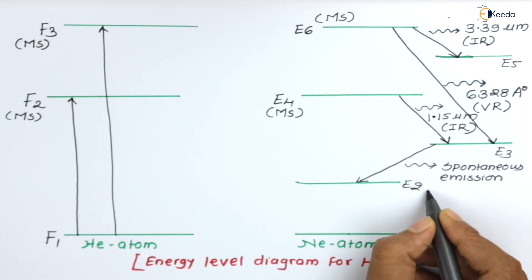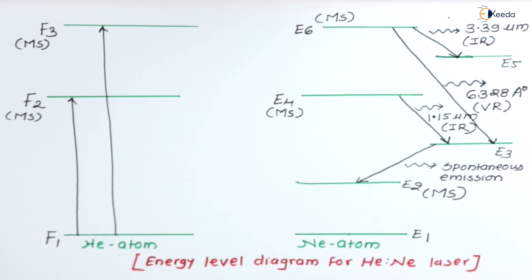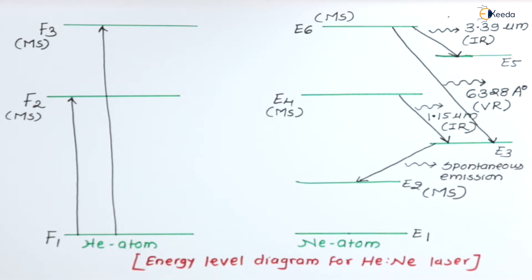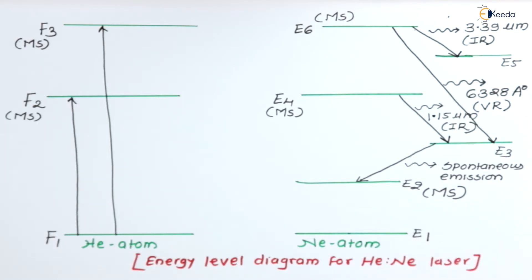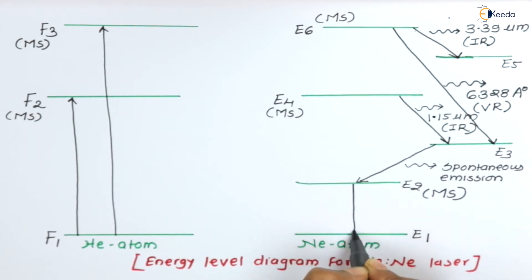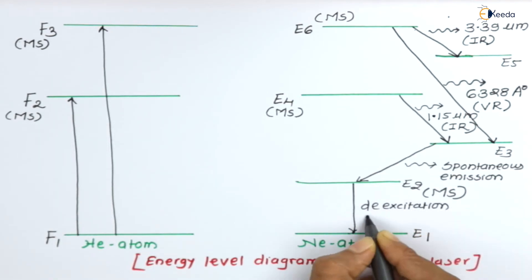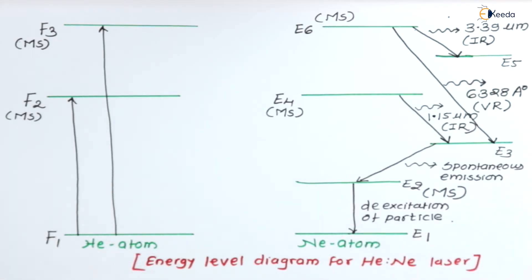E2 is again a metastable state for Neon, but population inversion is quite difficult here because we would need to achieve population inversion between the ground state E1 and E2. However, the ground state is always a populated state since it is the most stable state, so population inversion between E1 and E2 is not possible. Therefore, even though E2 is a metastable state, it will not give us laser action. Instead, there is a spontaneous emission or de-excitation of the particle, completing the entire process in the Helium Neon laser.